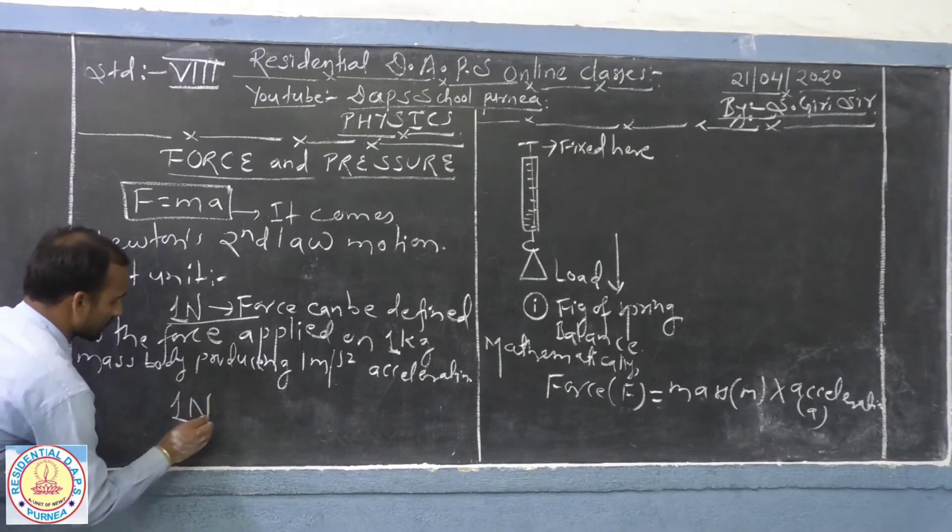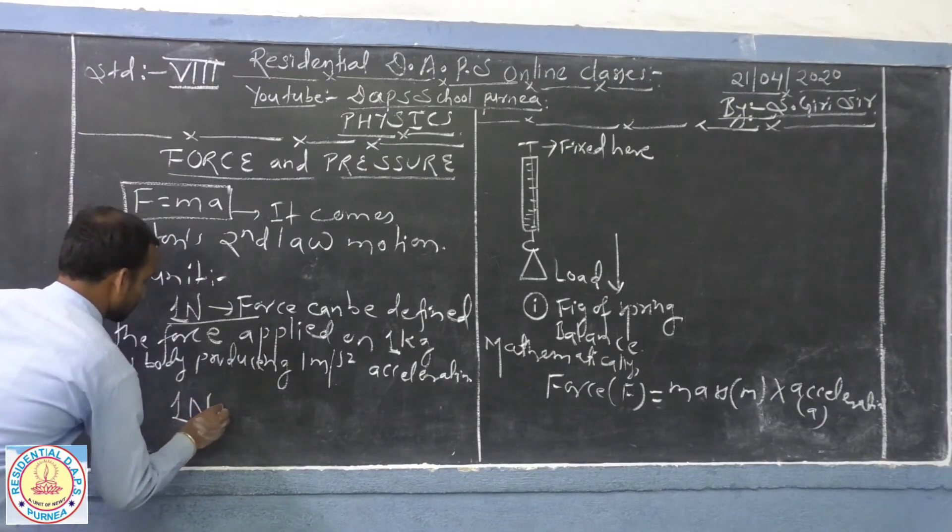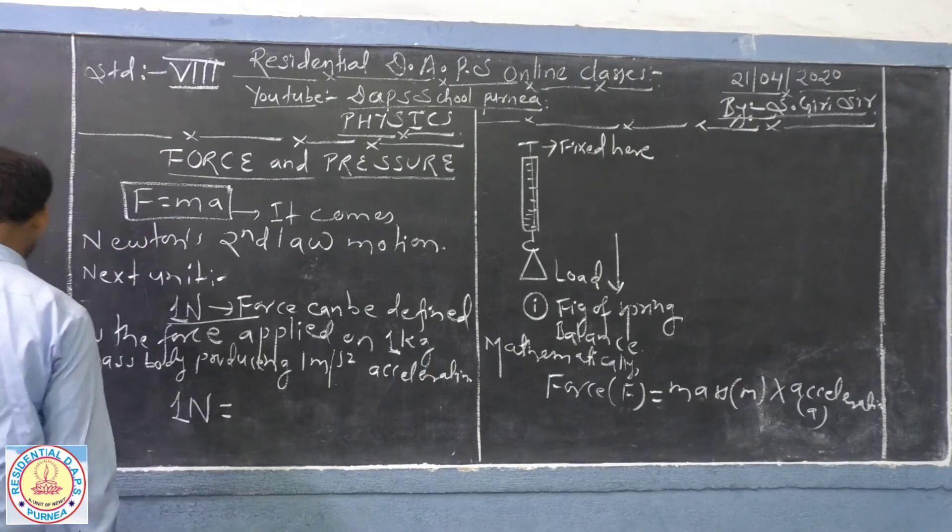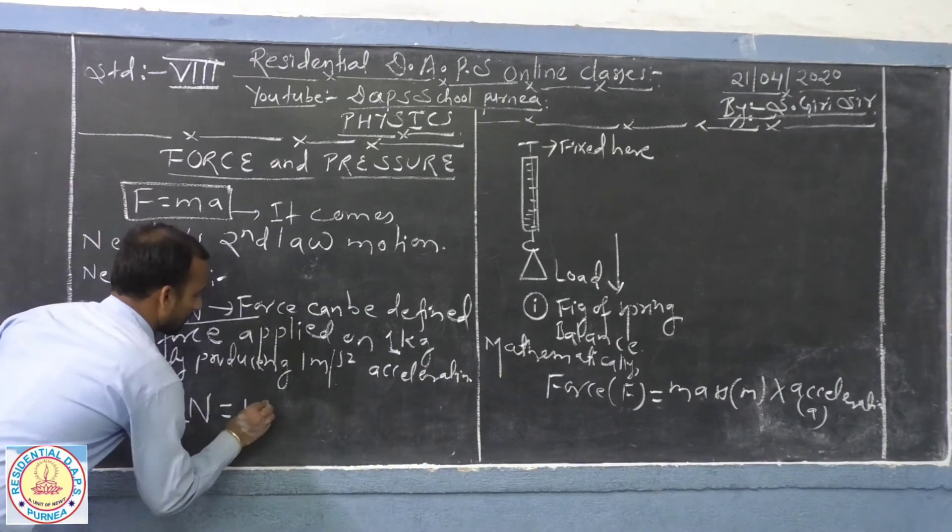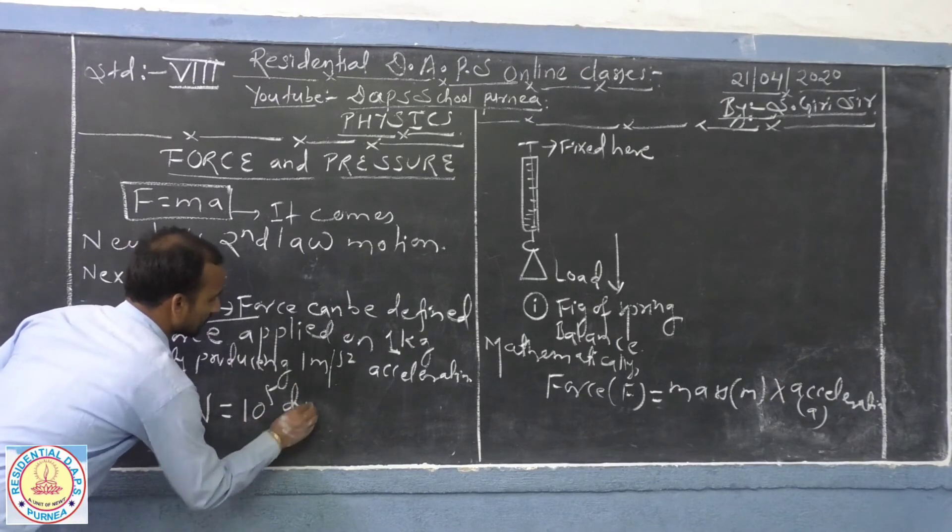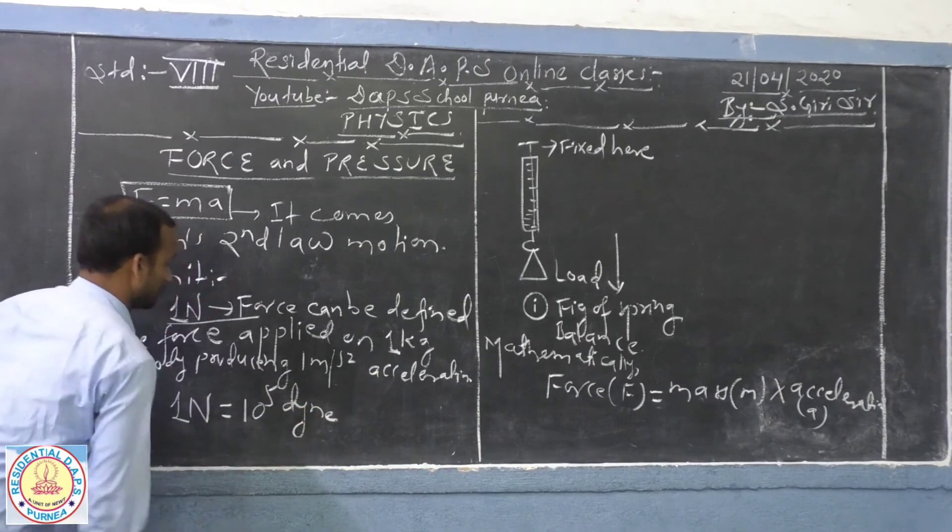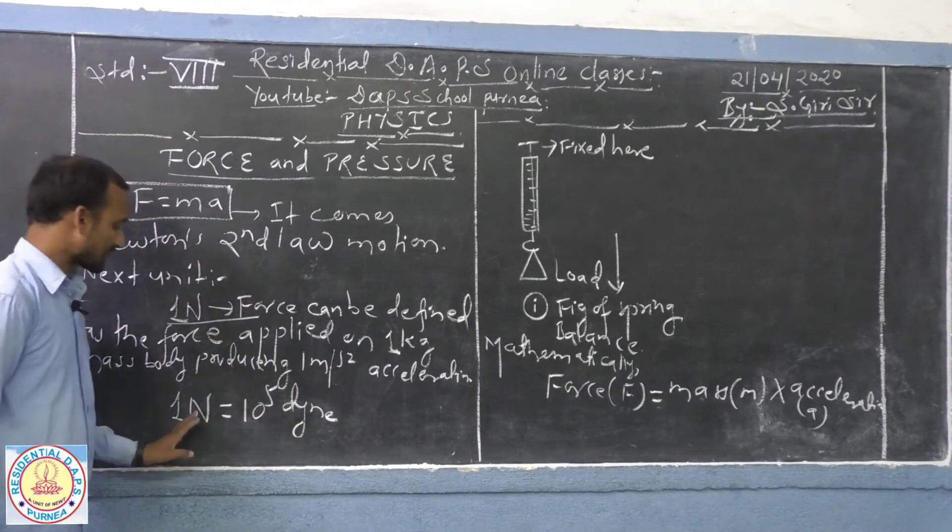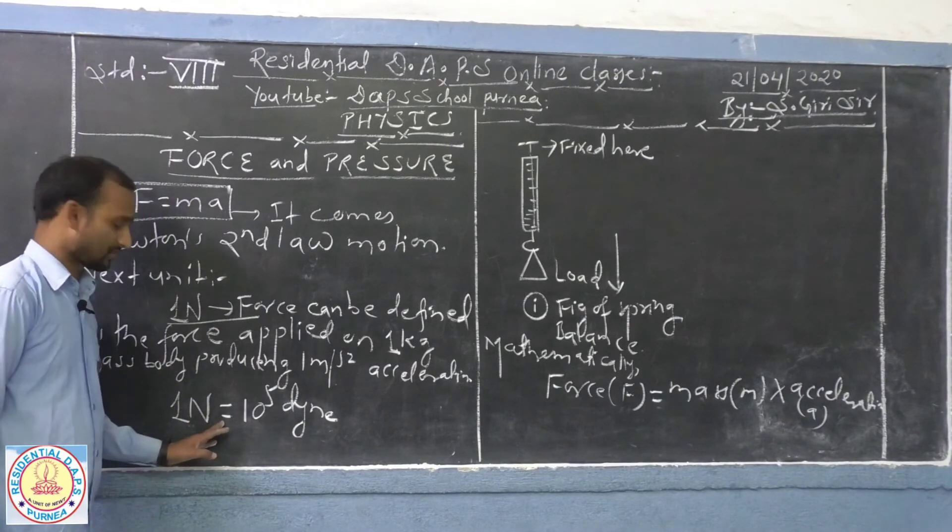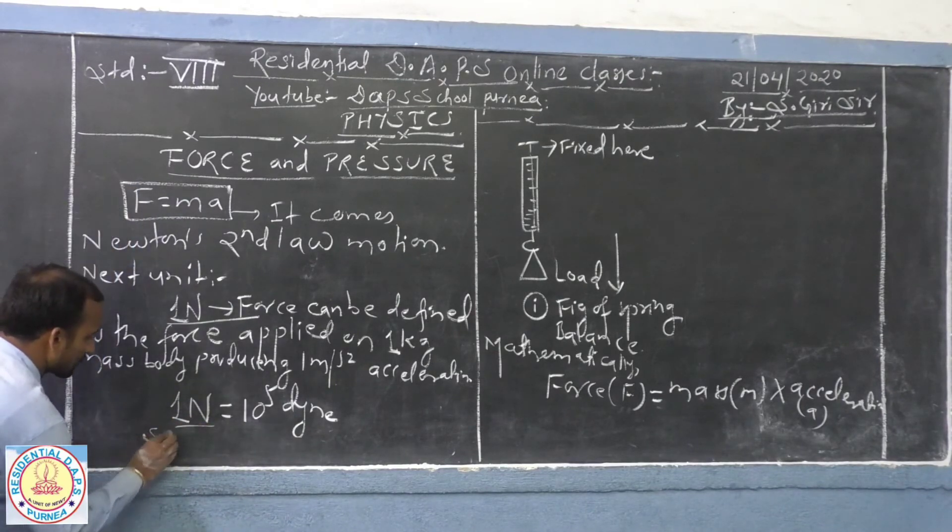1 Newton force equal to 10 to the power 5 dyne. When you express this 1 Newton force, it is SI unit of force.